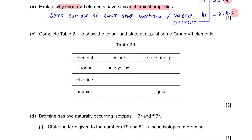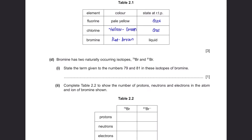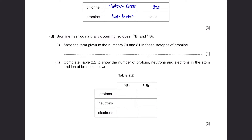Question C: Complete the table to show the color and state at room temperature of some Group 7 elements. You have to remember the physical state and color of each halogen at room temperature. Question D Part 1: State the term given to the numbers 79 and 81 in the isotopes of bromine. The top number always represents the nucleon number and the bottom number represents the proton number. You can also refer to the nucleon number as the mass number.